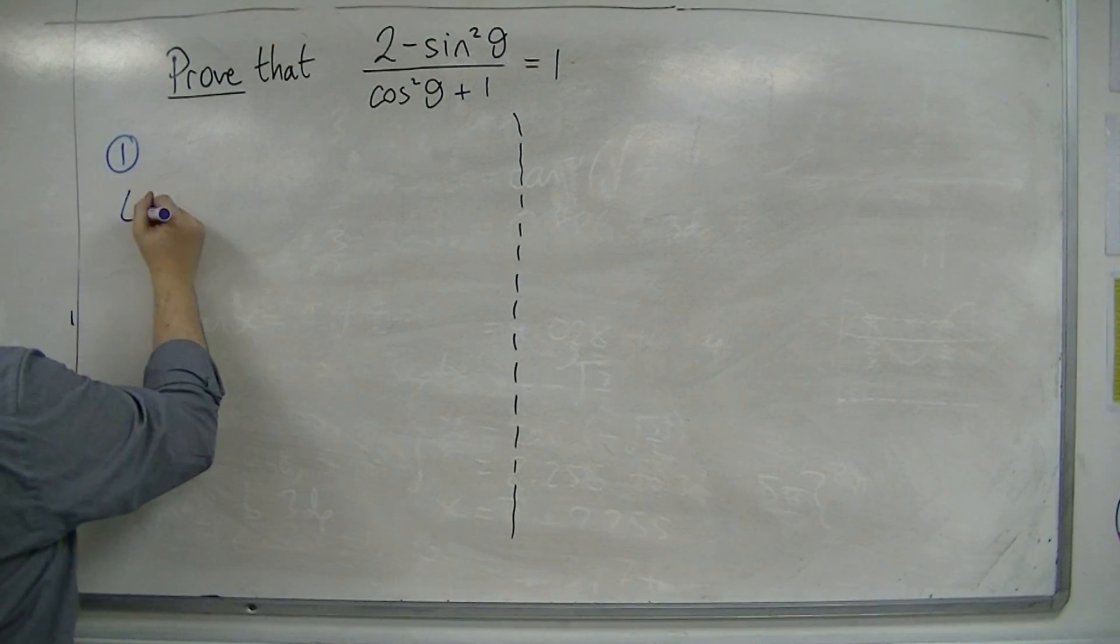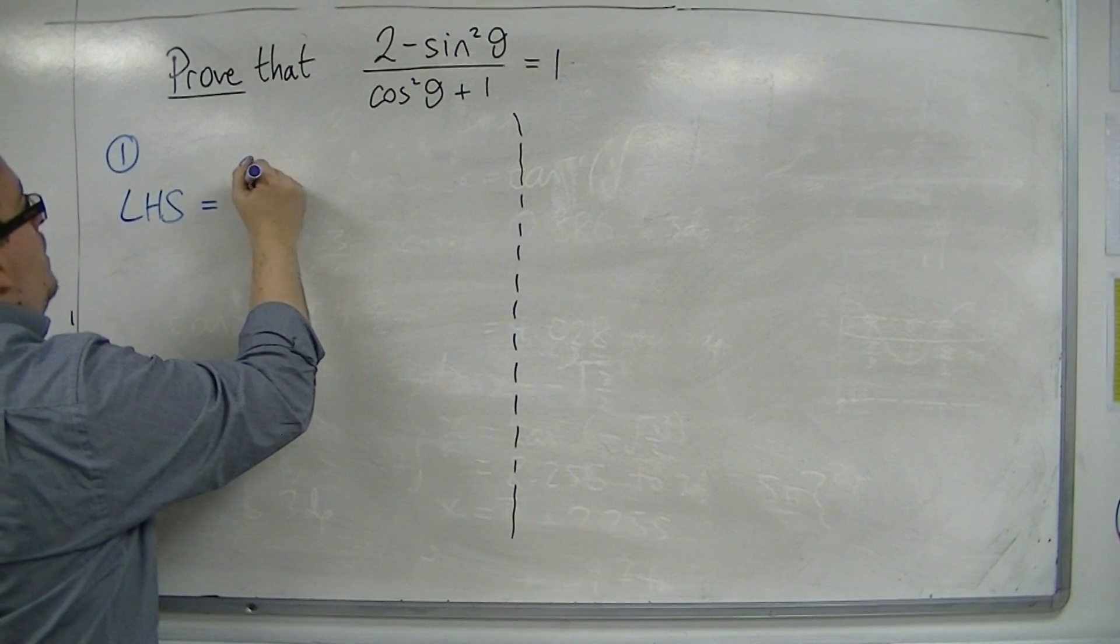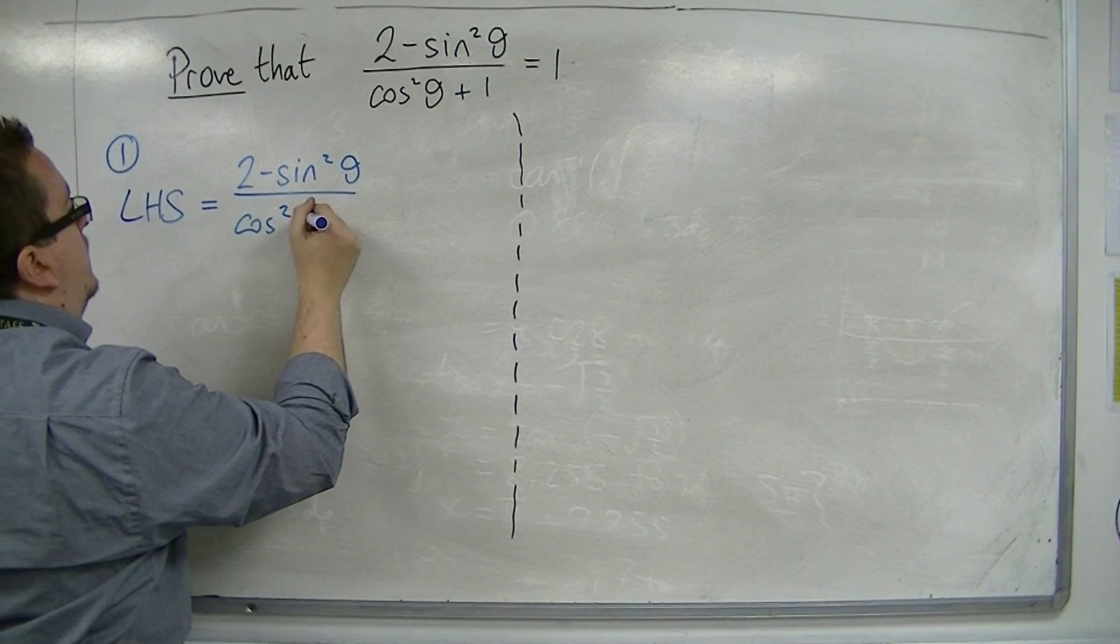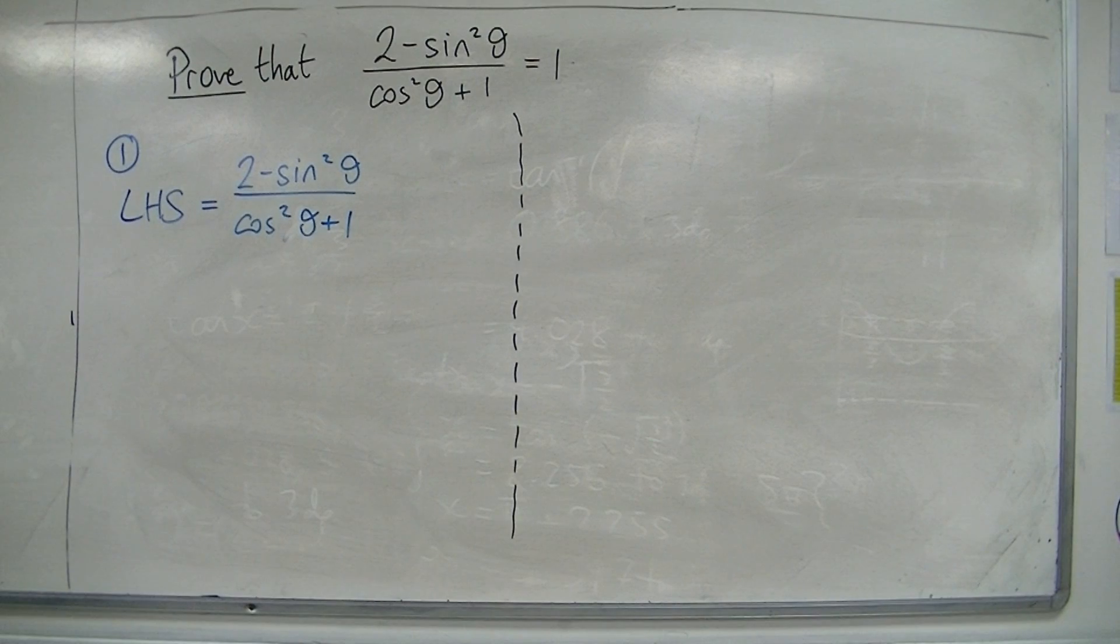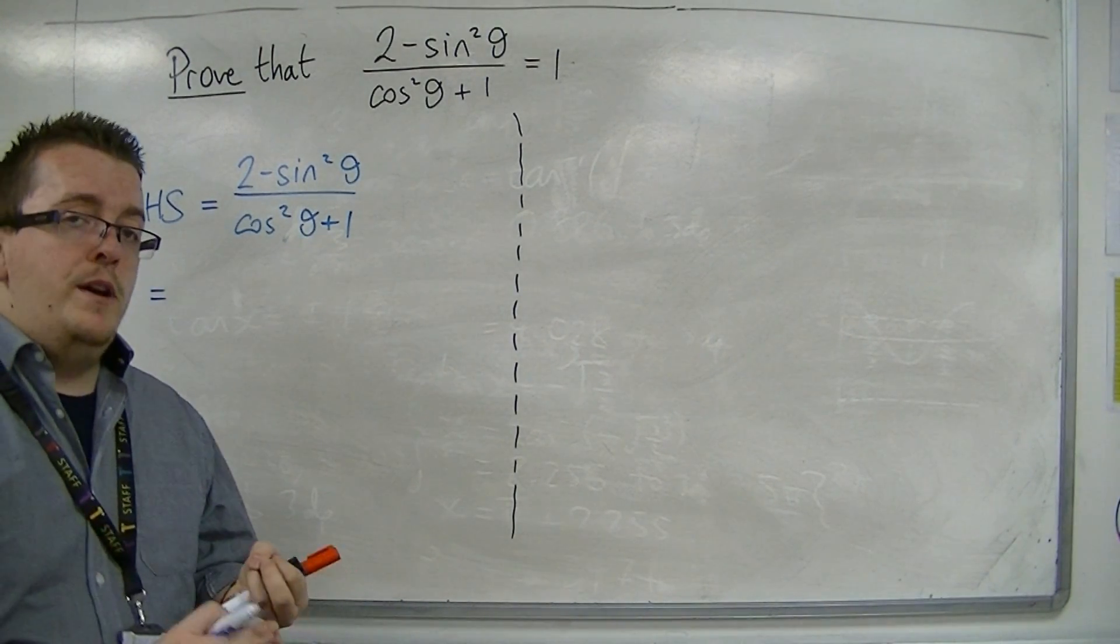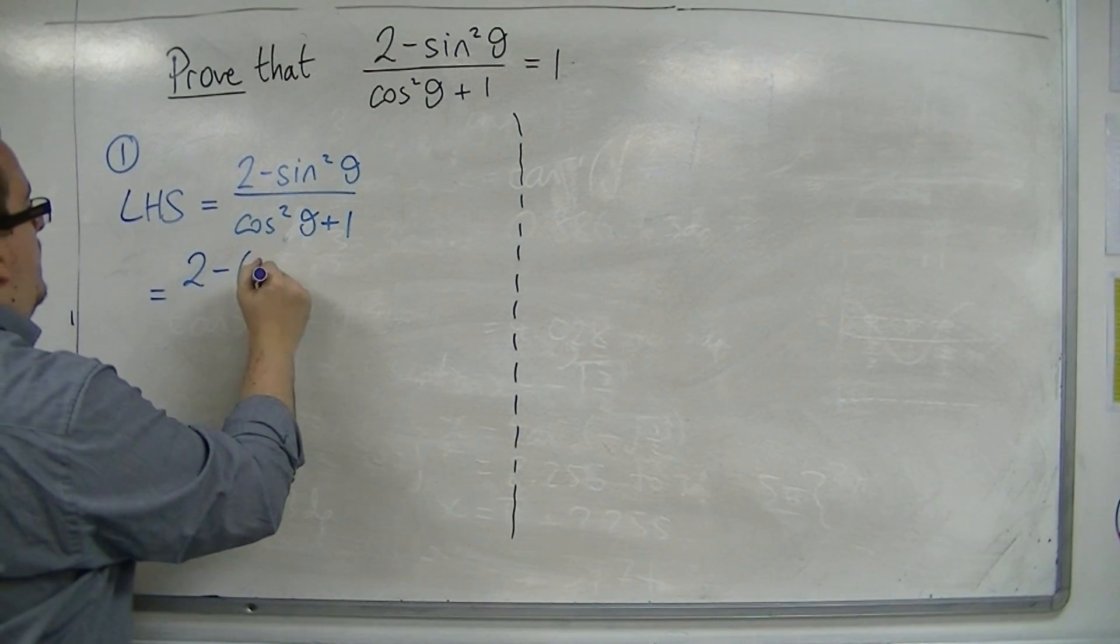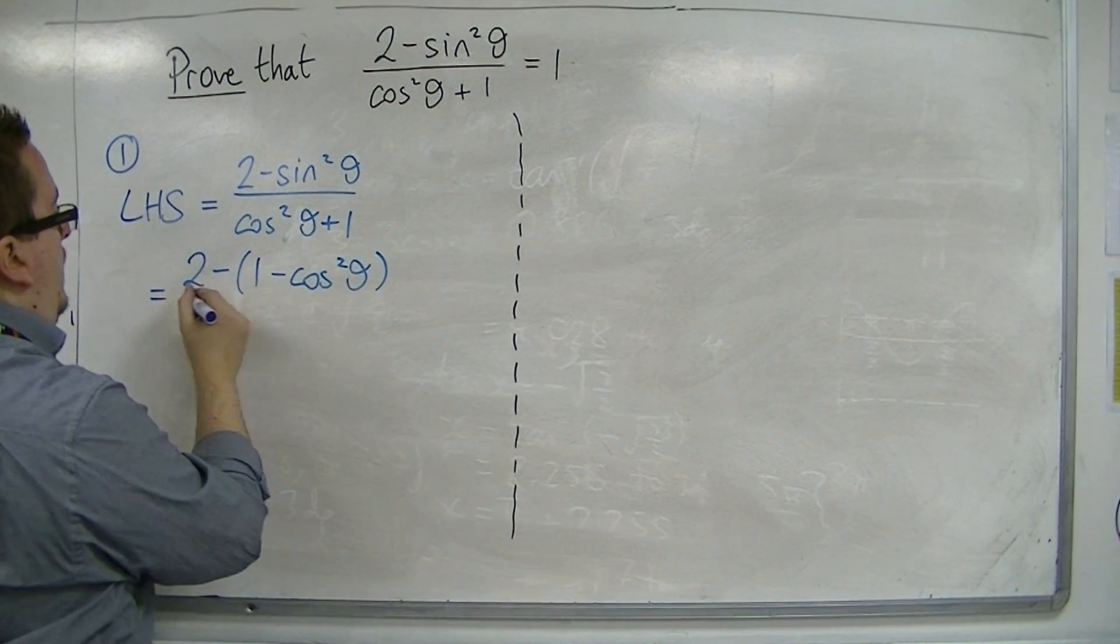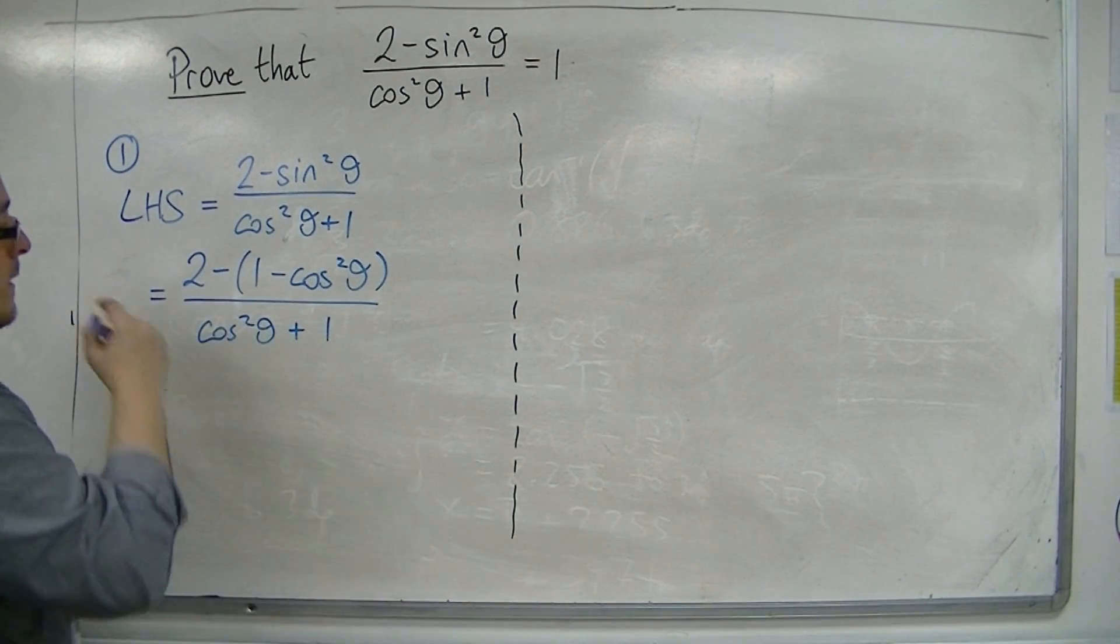So, I'm going to start off with the left hand side. I have 2 minus sin squared theta over cos squared theta plus 1. Now, if I replace the sin squared with 1 minus cos squared using the trig identity, then I'm going to get 2 take away 1 minus cos squared all over cos squared plus 1.